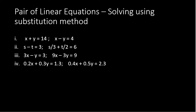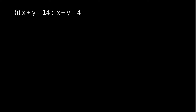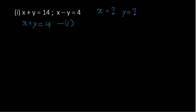The first problem: x plus y equals 14, and x minus y equals 4. Here we already have x expressed. So x is equal to y. Equation 1 is x plus y equals 14, and equation 2 is x minus y equals 4.